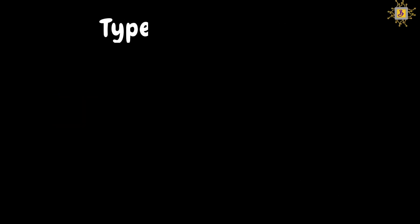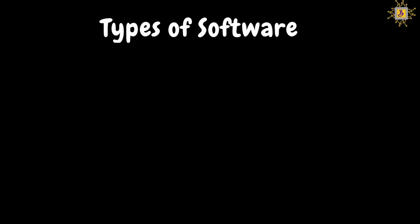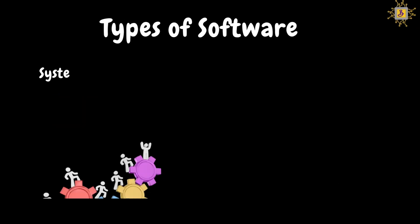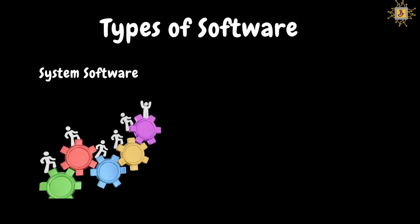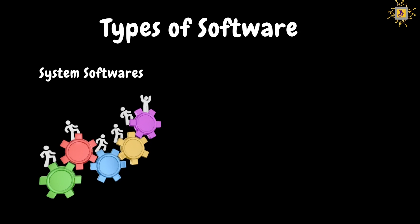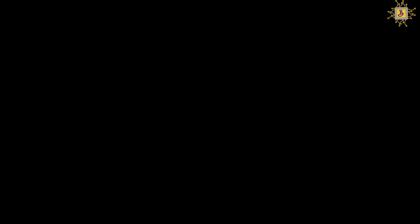Software is a set of instructions and programs that tell the computer what to do. So, what are the types of software? Basically, there are two types of software: one is system software, and the other is application software.